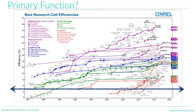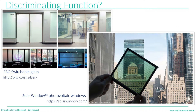Looking at the discriminating function — something this material can do that nobody else can — they claimed this material allows you to switch windows from transparent to opaque. But there are already companies delivering commercial doors and windows that switch in seconds between transparent and opaque. Regarding photovoltaic windows, there are projects like Solar Window claiming to cover buildings with photovoltaic panels that remain transparent. We see that this new claim regarding the discriminating function will be difficult to compete against current competition.